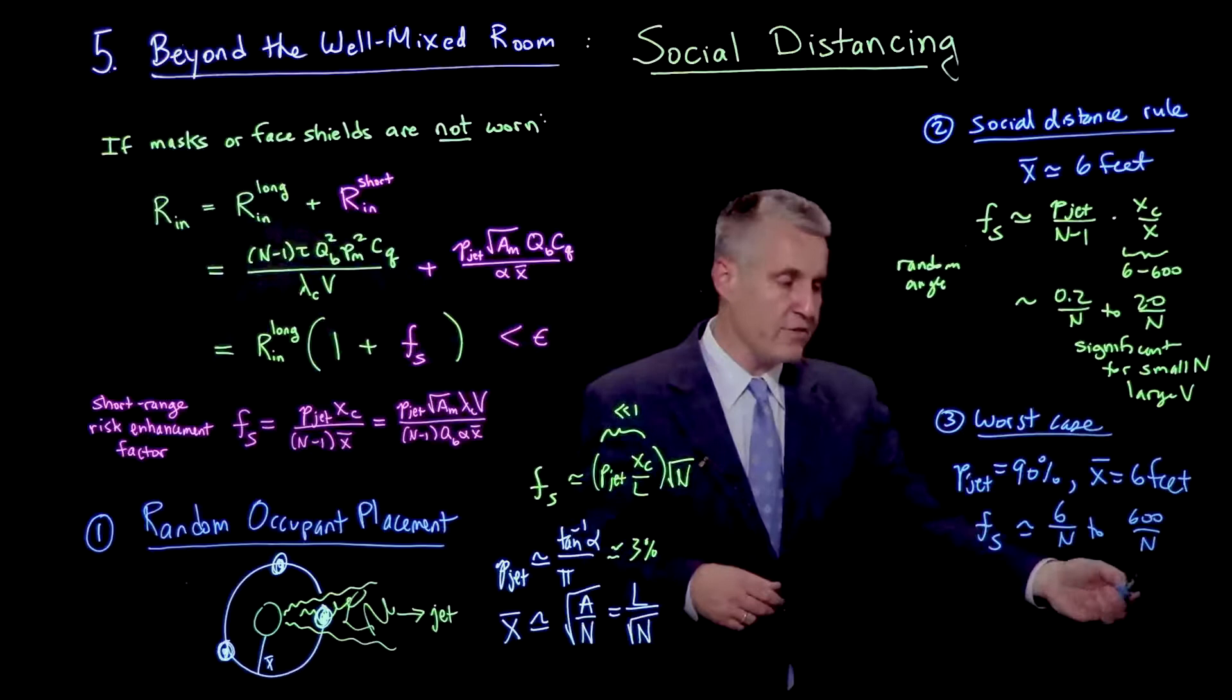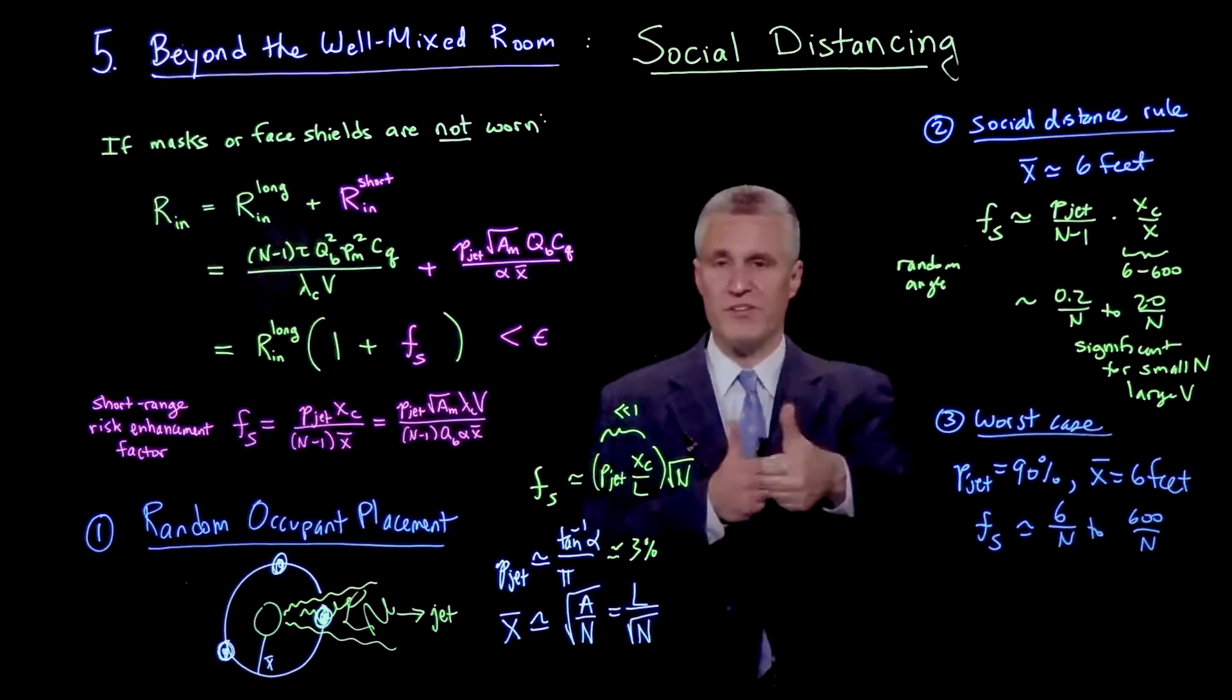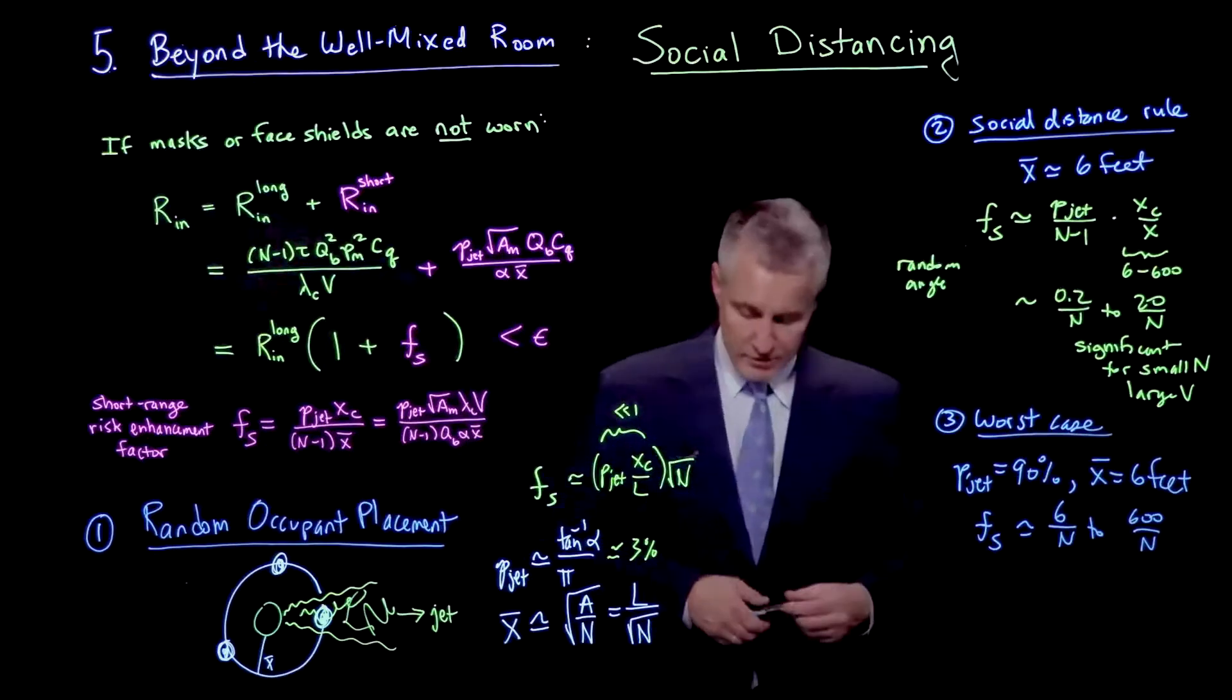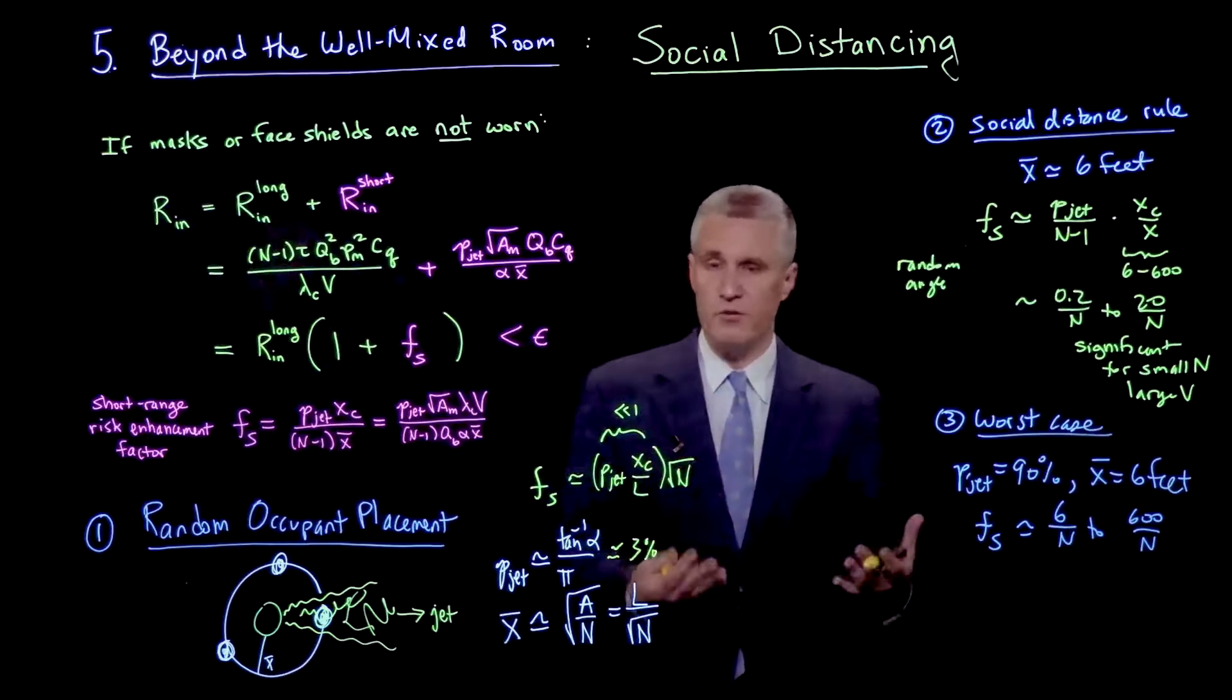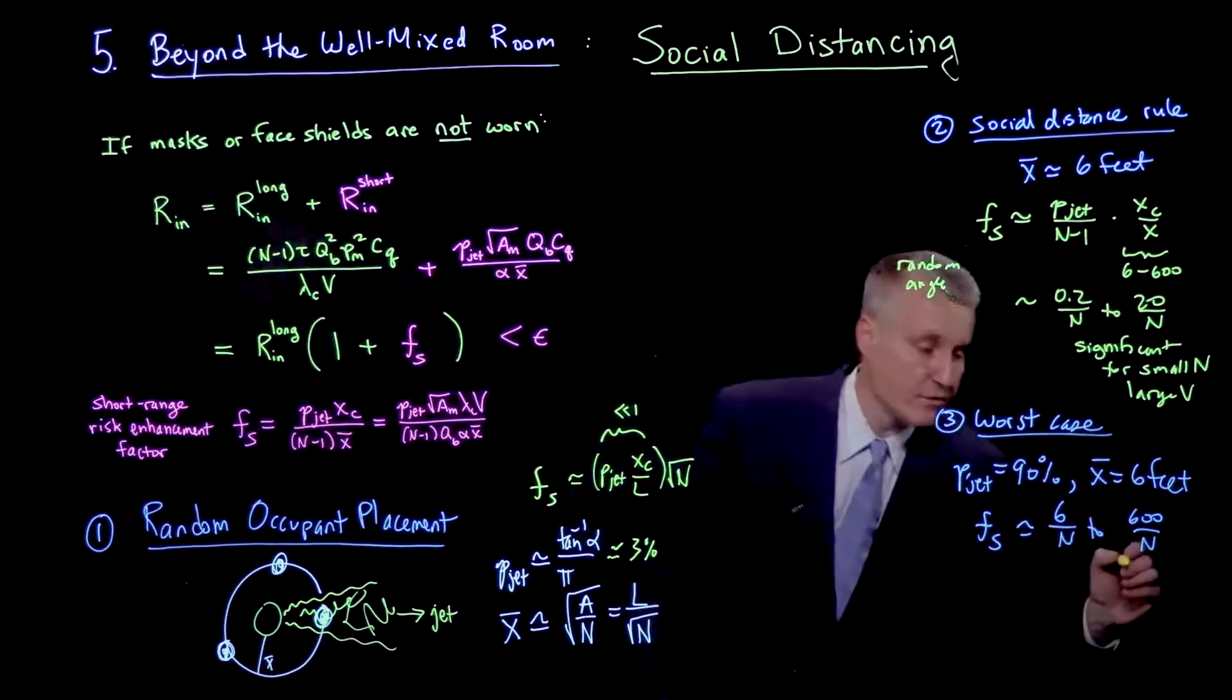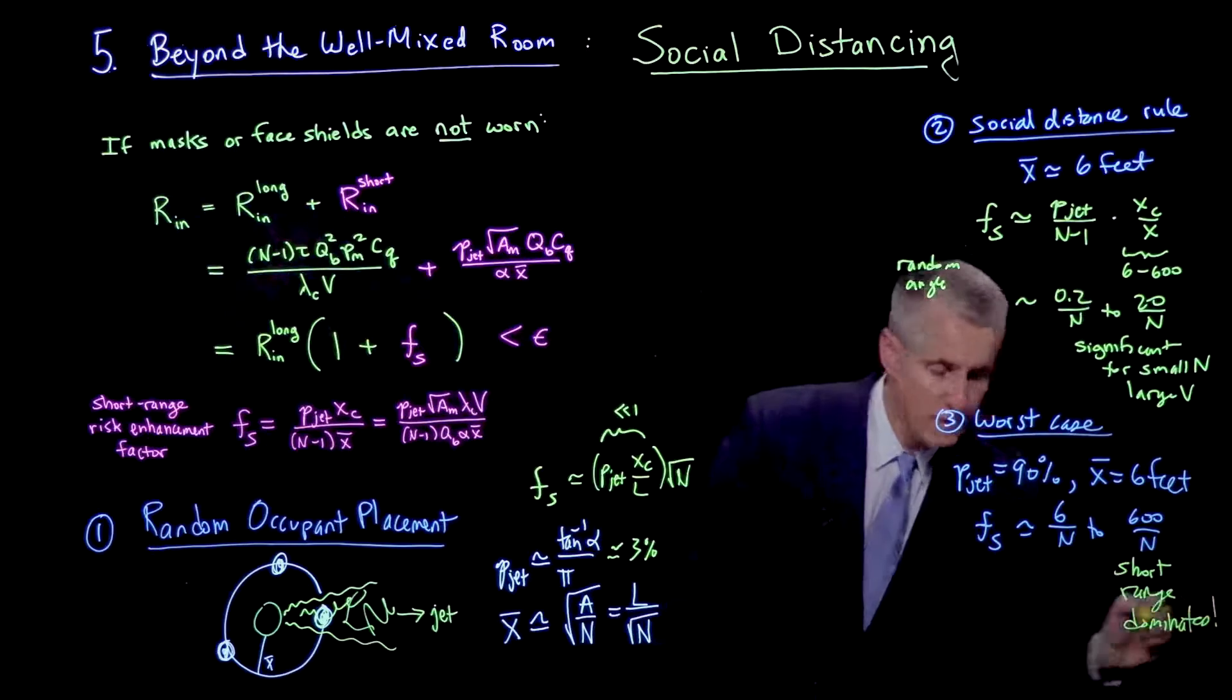We can see that the short range effect can be a lot larger. Notice, even if n gets to be really large, like a lot of people in the room, let's say it's a restaurant with 100 people in the room, still it's six times worse to be in a single person's respiratory jet 90% of the time at six foot distance. So that's actually fairly alarming if you think about situations such as restaurants or office meetings or any other normal activity where people are facing each other and breathing on each other continuously without wearing masks or face shields. Short range dominates in this situation.